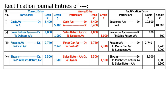Narration: rectification entry passed to rectify the purchase return as it was by mistake recorded in the sales return book. The journal is to be totalled — the totalling is Rs. 17340 both in the debit and credit columns, and this is the final answer. Thank you very much.